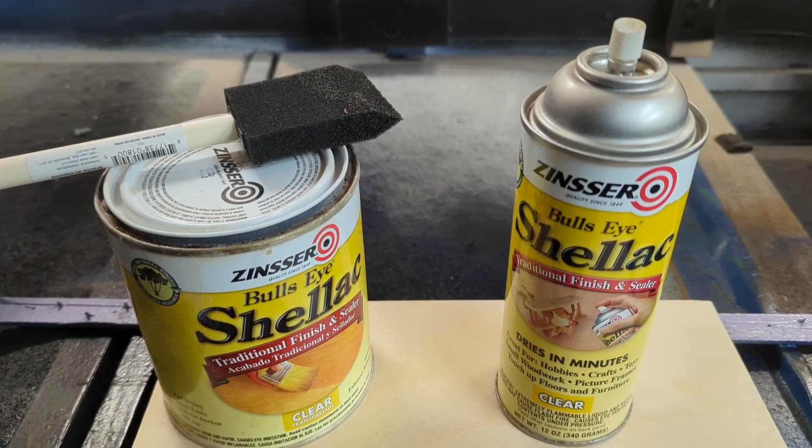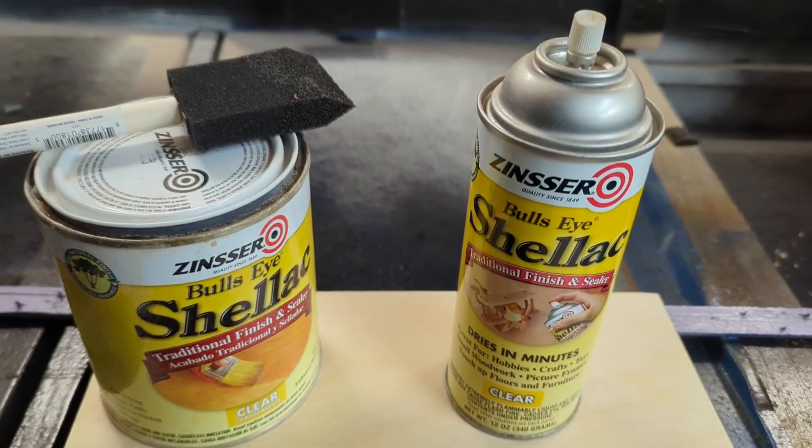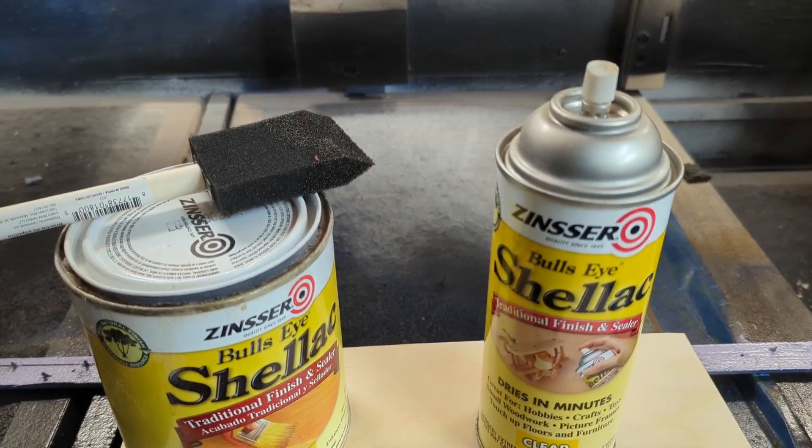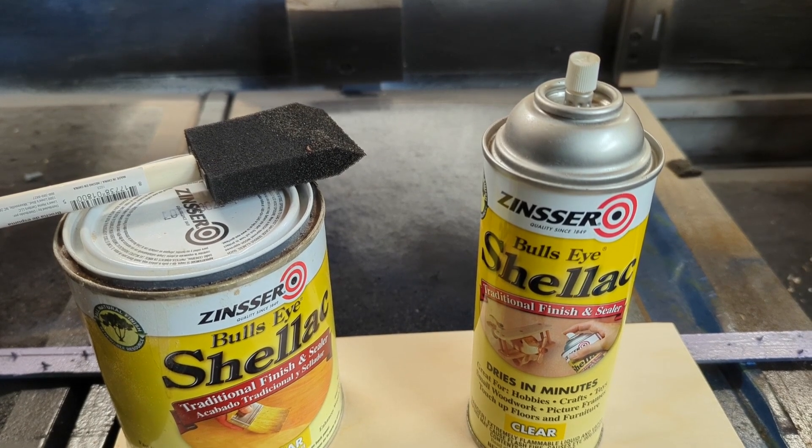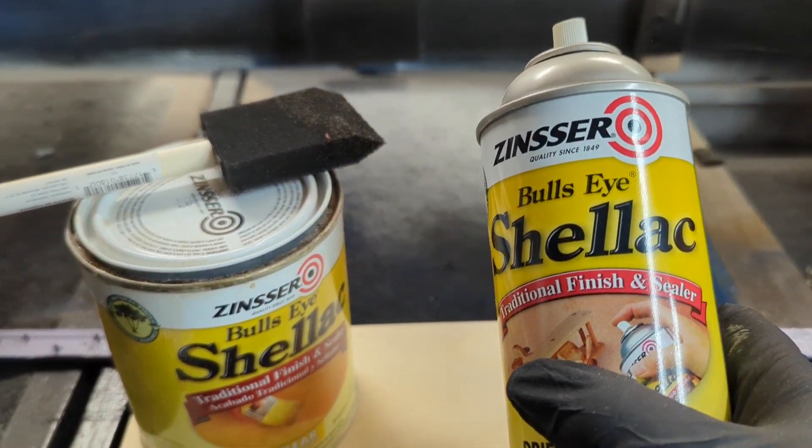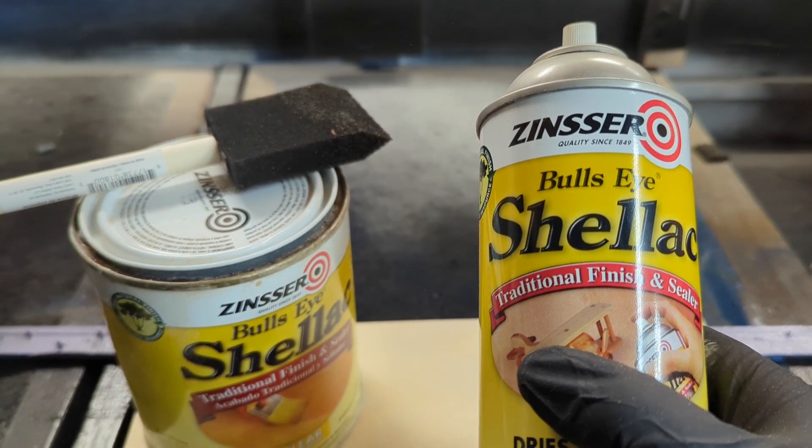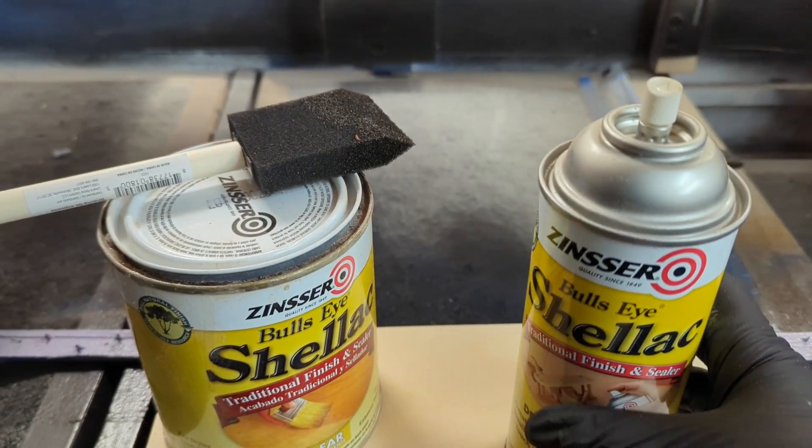Once done, prep your wood by doing a light sand to remove the berm. Then apply two coats of shellac to seal the grains and prevent the paint from bleeding. Make sure the shellac gets into the engravings. It's best if you can let this dry overnight if possible to set.